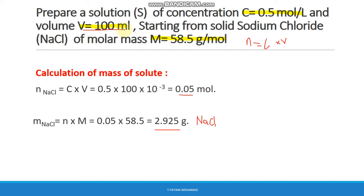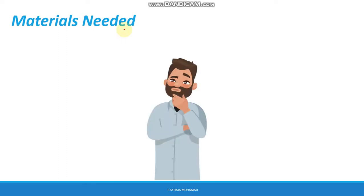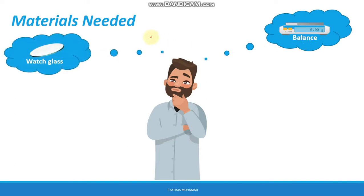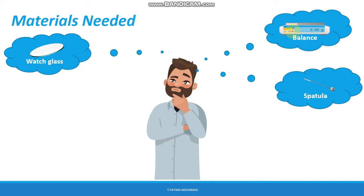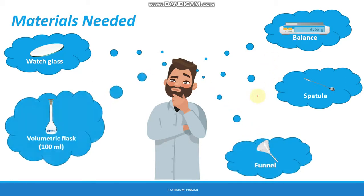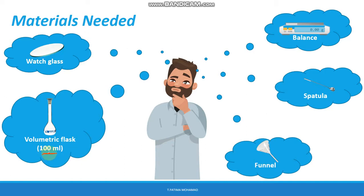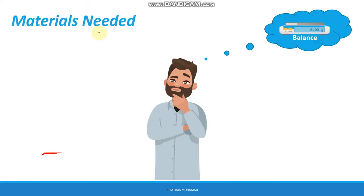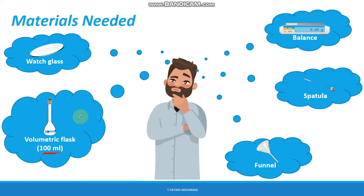Now, how do we do this? First, we need to know the materials required. You will use a balance to weigh the amount of solute, a watch glass to weigh on, a spatula to take the NaCl from the commercial bottle, a funnel, and finally a volumetric flask of 100 mL. We choose a 100 mL volumetric flask because the volume of the solution is 100 mL — the capacity of the volumetric flask always equals the volume of the solution.